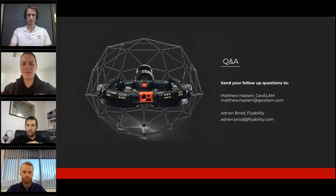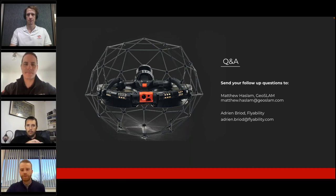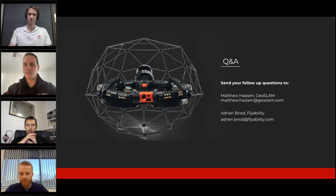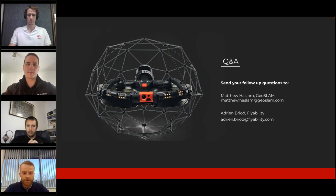Steve is asking what type of file is used as a deliverable to clients. Once the data is processed in GeoSlam Connect, we have a multitude of export options: E57, LAZ, LAS, PLY, and TXT. We also have GeoSlam Draw, an add-on to GeoSlam Connect for working with the data for CAD models, which can export to RxP, DXF, and similar CAD formats — a multitude of formats suited for anyone's third-party integration into their full workflow.